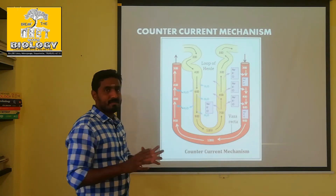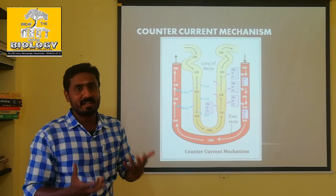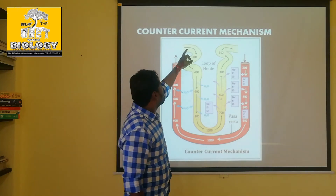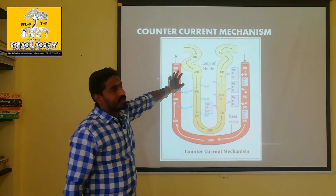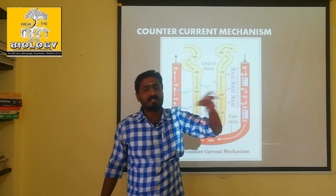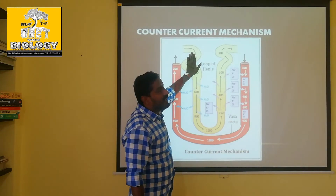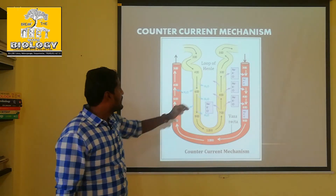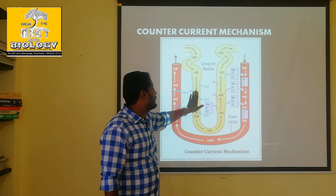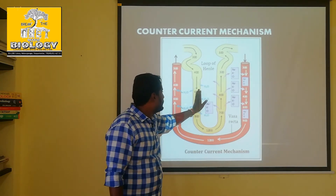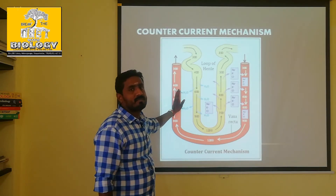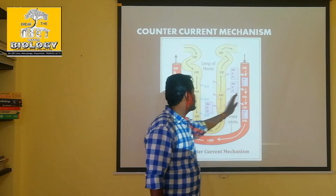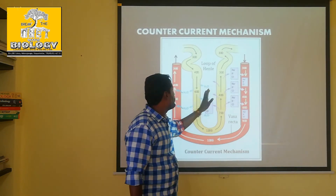We will now address the maximum question. In the counter-current mechanism, the urine passes through the collecting duct. This is the salt concentration — the solute concentration. The descending loop is water permeable and the ascending loop is salt permeable.